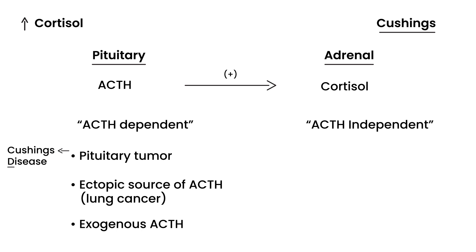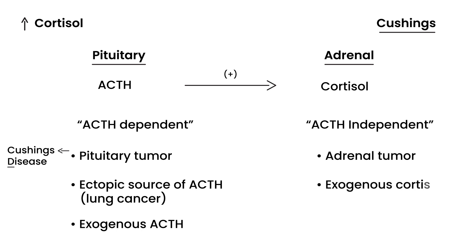The ACTH-independent types of Cushing's have two subtypes. The first is when there's an actual tumor in the adrenal gland. The second is any scenario in which a patient is receiving exogenous cortisol. That's a brief overview of the different types of Cushing's.